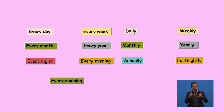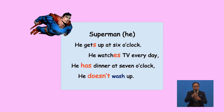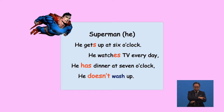Most importantly, when you come across these keywords in a sentence, remember to use simple present tense. Here comes the last part for revision — the Superman rule. Remember, Superman only rescues one person. He will help one person do an action. Read aloud: 'He gets up at 6 o'clock. He watches TV every day. He has dinner at 7 o'clock. He doesn't wash up.' When one person is doing an action, we add S to the verb.